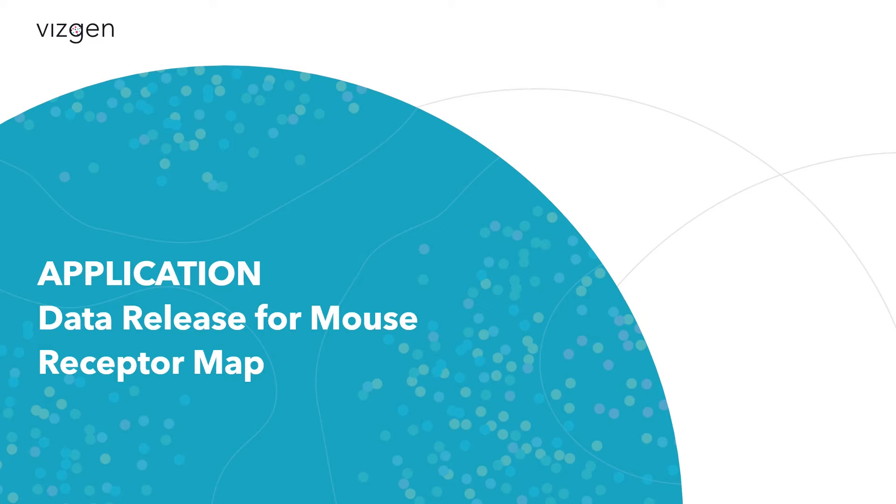And so now into the last section, and this is something that we're really excited to announce, which is a program where we're going to have a series of data being released off of our MRscope instrument. And the first set of data has just been released, which is a mouse receptor map. And I'll show you some of that data here.